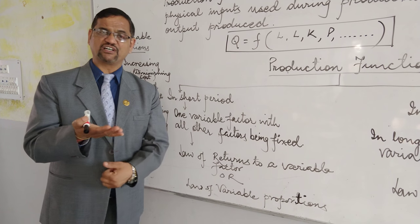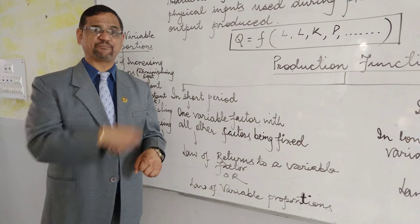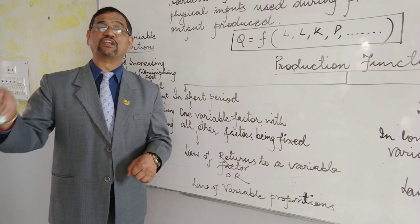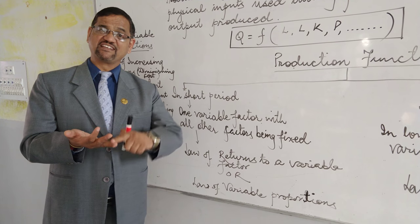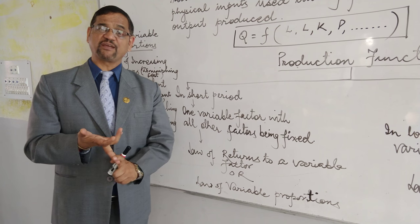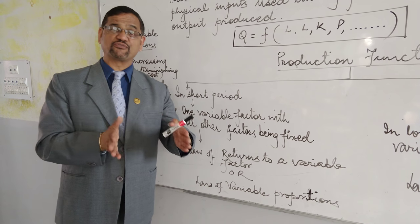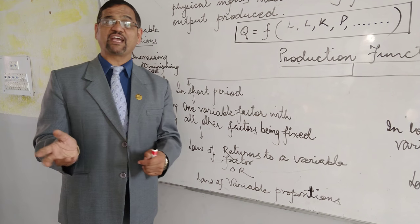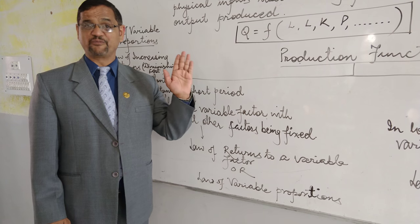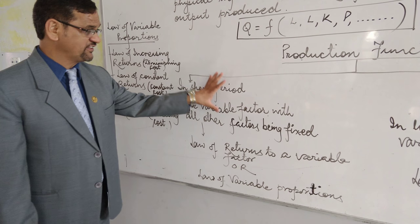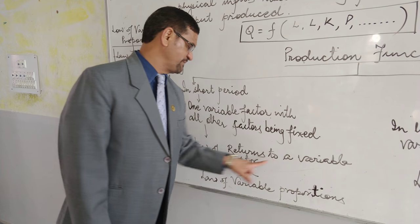For example, in a factory knitting woolen clothes, the machines, building, and entrepreneurs are the same — only labor is increasing. If I increase labor from 1 to 2, 2 to 3, 3 to 4, 4 to 5, it will not move in a unitary method. The way it moves will be called the law of returns to a variable factor.